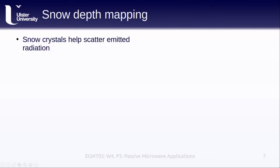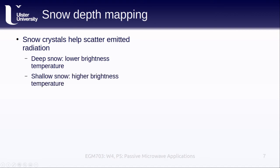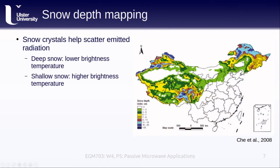Snow crystals help to scatter emitted radiation, which means that deep snow tends to have a lower brightness temperature due to the increased number of scatterers present, at least when compared to shallow snowpacks. Using the measured radiation emitted by the ground surface, we can estimate the depth of the snowpack over time. This map from a 2008 study by Che et al. shows the distribution of average winter snow depth in China over the period 1978 to 2006, based on data from two microwave radiometers: the Scanning Multi-channel Microwave Radiometer, or SMMR, and the Special Sensor Microwave Imager, or SSM/I.